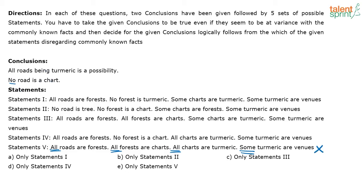Option 4 has a negative statement, so keep it. Looking at option 3, again there are only all, all, some, some — no negative statements at all — so you can never arrive at this conclusion. Eliminate option 3. You are now left with only statements one, two, and four. Draw the Venn diagrams for these and check which gives you the required conclusion.